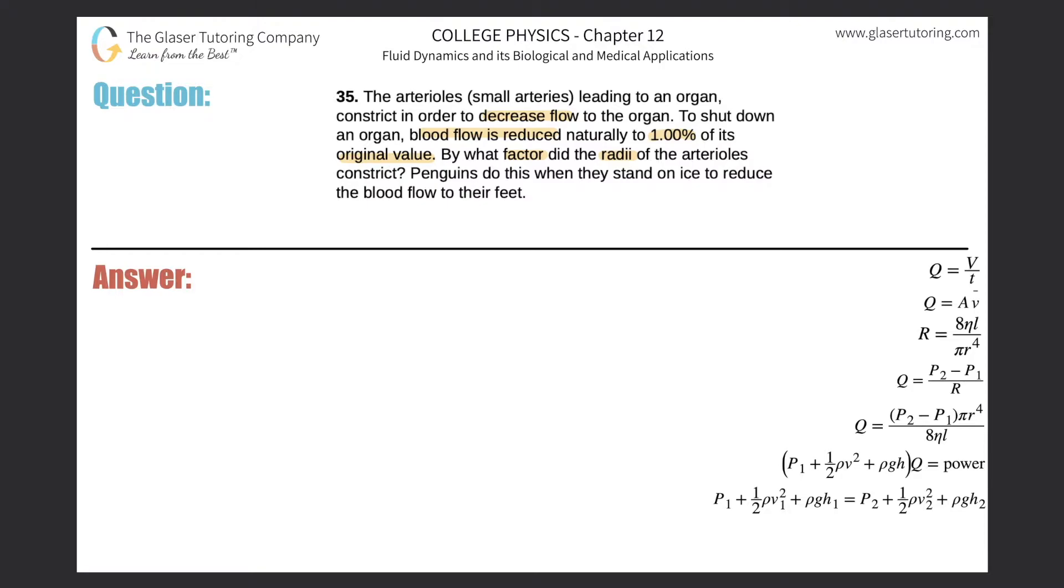Alright, so on this one I'm going to run through it quickly. Check out number 34 where I showed how to use this equation in order to deduce everything, but we're going to approach this one a little faster. What we have here is we realize that Q is related to the radius basically like this: the original Q value would equal the original radius raised to the fourth power.